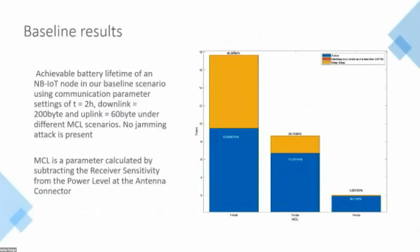As our baseline results — with no jamming attack — when we have a good signal at 144 dB maximum coupling loss, we have a battery lifetime of up to 17 years. It goes down to as low as two and a half years when we go into deep coverage and extended mode at 164 dB. The 144 dB and 164 dB values represent the maximum coupling loss for each device.